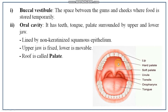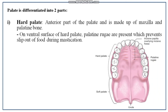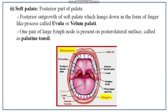The palate is differentiated into two parts. The anterior part is the hard palate, made up of the maxilla and palatine bone. On the ventral surface of the hard palate, ridges known as palatine jugae are present; their function is to prevent slipping out of food during mastication, and these are well developed in carnivores. The posterior part is the soft palate.